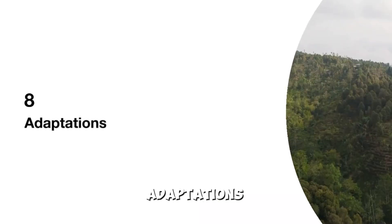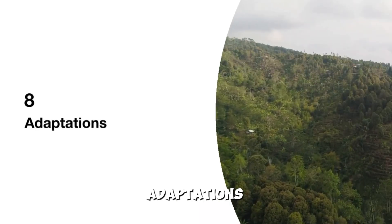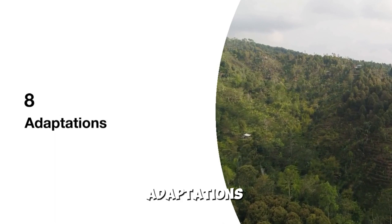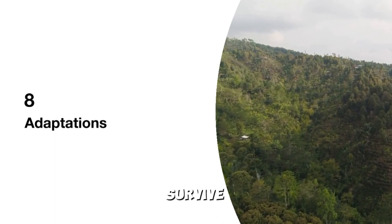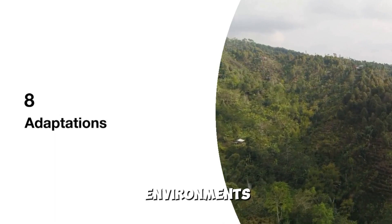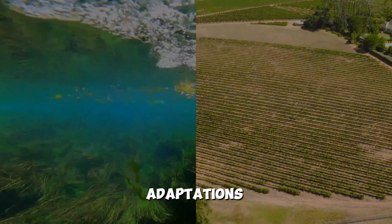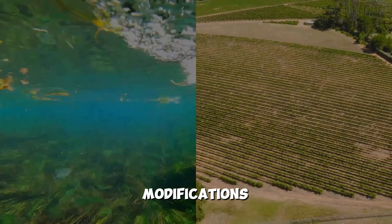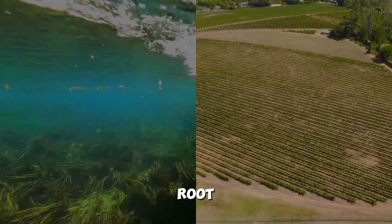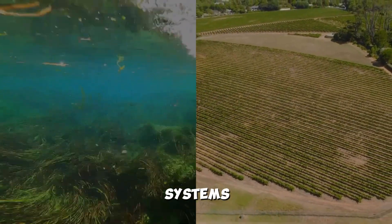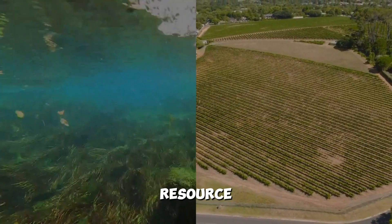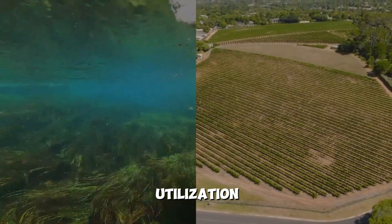8. Adaptations: Plants exhibit various adaptations to survive in diverse environments. These adaptations include modifications in leaf structure, root systems, and other features to optimize resource utilization.